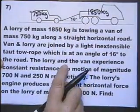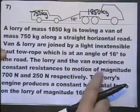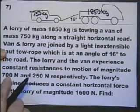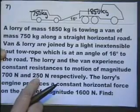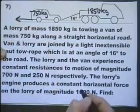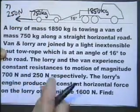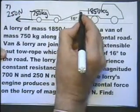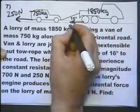The lorry and the van experience constant resistances to motion, and it's one figure for all of the total resistances for the lorry, and one figure for all the total resistances to the car. So let's just say resistance there to the car, and resistance there to the lorry.